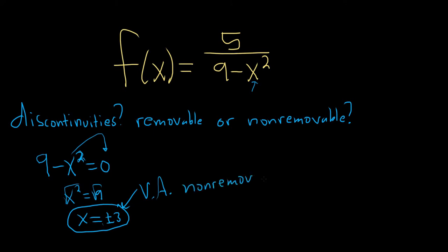So this is a rational function, and that's how we know these are asymptotes. And vertical asymptotes are always non-removable no matter what. That's it.